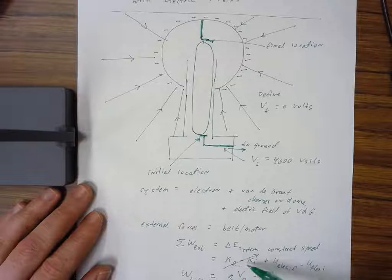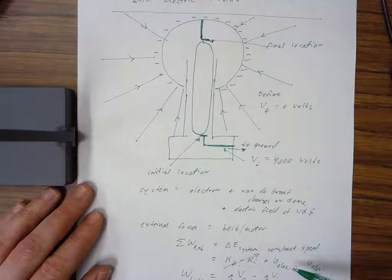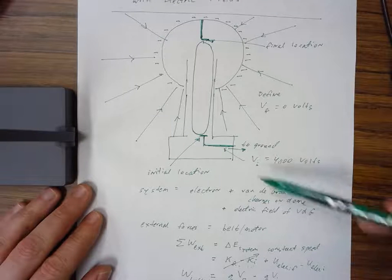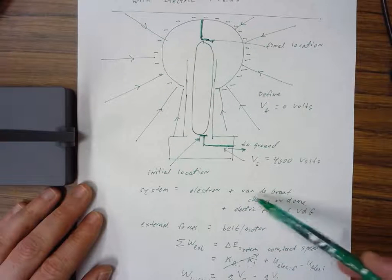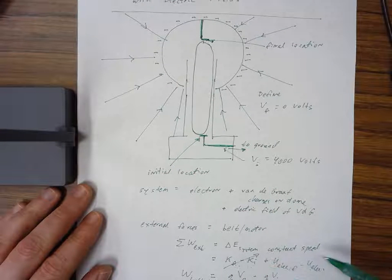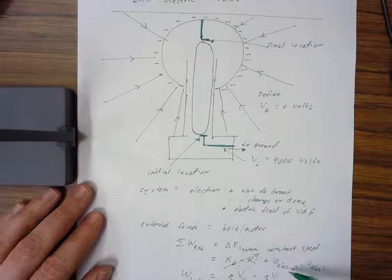I've crossed out the change in K because I want to keep this problem simple. We'll assume the belt moves the electron at constant speed, so the kinetic energy hasn't changed. We're just left with the change in electric potential energy.